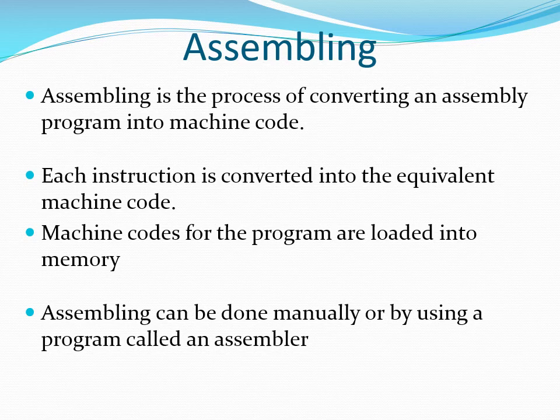Assembling can be done manually or can be done using a program called an assembler. The process for assembling manually uses the principles for converting assembly instructions into machine code that we learned in the previous lecture. When you use an assembler, the process is made to be faster — the computer changes the assembly instructions into machine code at a faster speed.